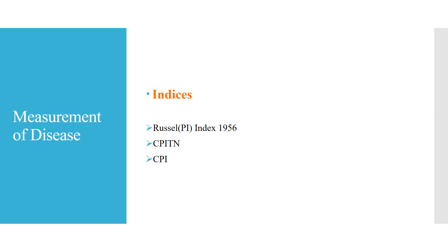Measurement of disease: there are many indices, among which the following three are used widely — the Russell periodontal index, CPI-TN, and CPI. In the WHO proforma to measure the periodontal condition, the most commonly used is CPI. In our indices discussion, we have also discussed CPI and CPI-TN.